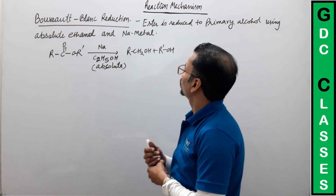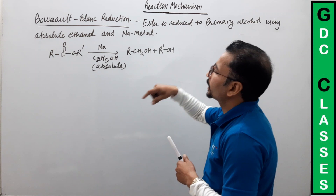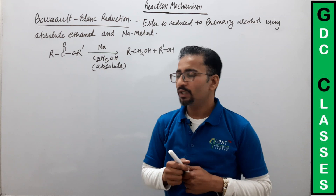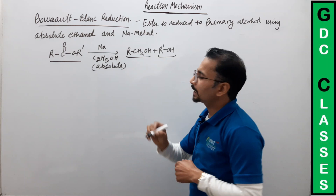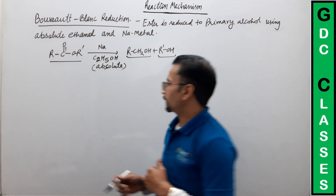So an ester is reduced to primary alcohol using absolute ethanol and sodium metal. हमारे पास यह ester है, sodium metal के साथ और absolute ethanol use करके, दो अलग-अलग primary alcohols हमें मिल रहे हैं। कैसे मिलेंगे? Mechanism देखते हैं।